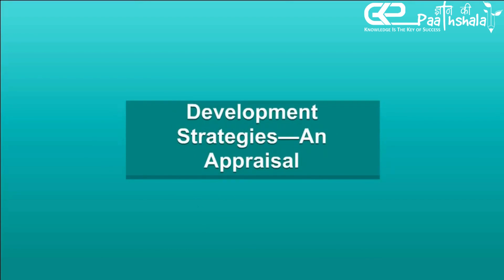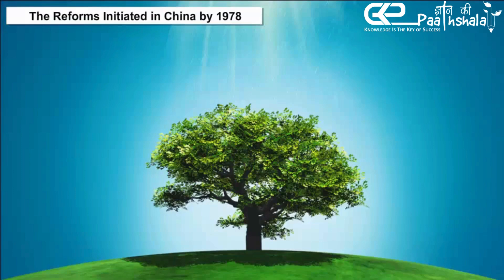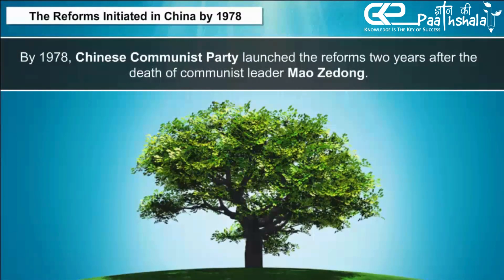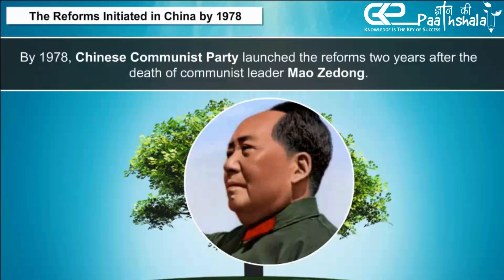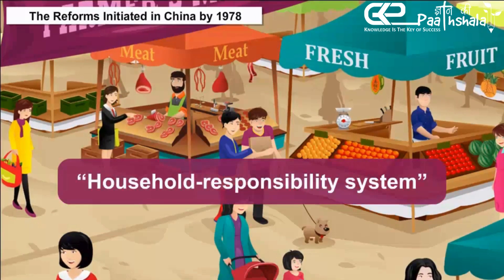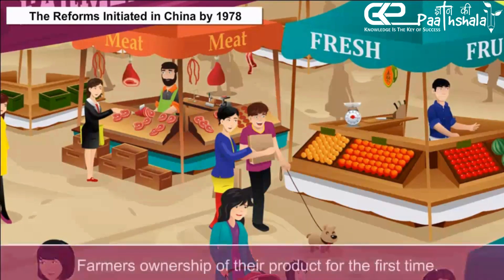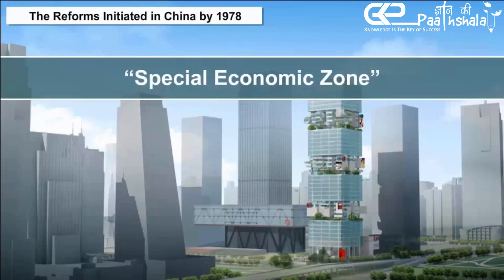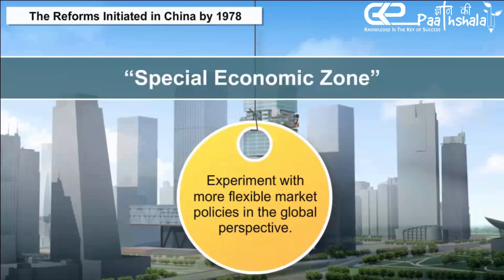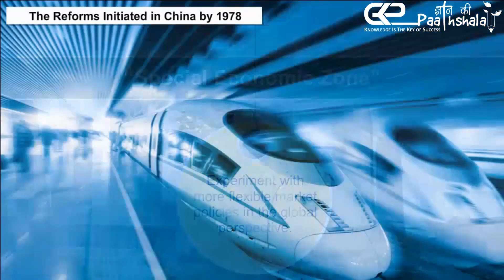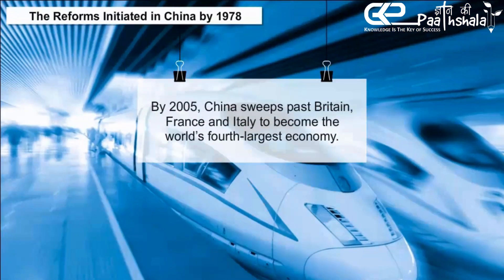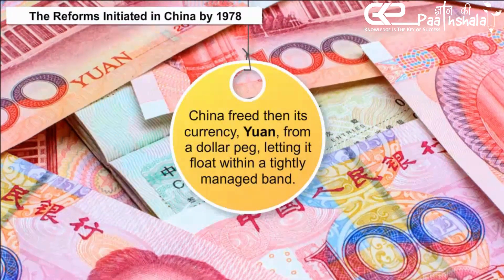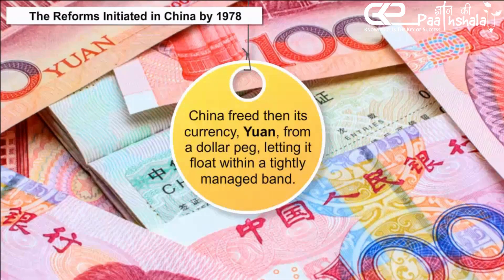Development Strategies and Appraisal — The Reforms Initiated in China by 1978. By 1978, the Chinese Communist Party launched reforms two years after the death of communist leader Mao Zedong. China started the household responsibility system in the countryside, giving some farmers ownership of their product for the first time. The southern city of Shenzhen was made the first Special Economic Zone to experiment with more flexible market policies. By 2005, China swept past Britain, France, and Italy to become the world's fourth largest economy, and freed its currency, the yuan, from a dollar peg, letting it float within a tightly managed band.